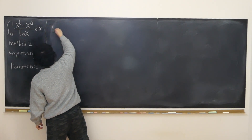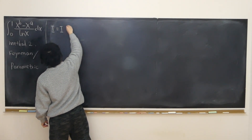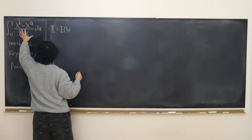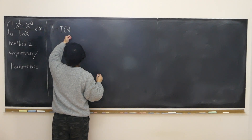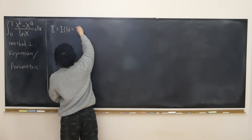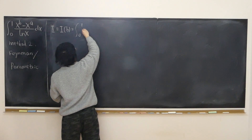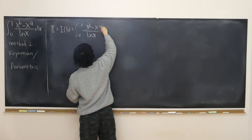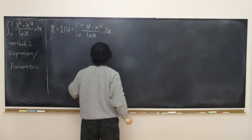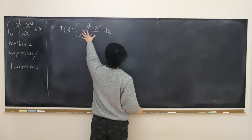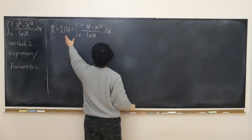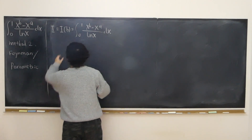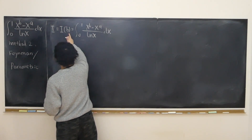Let I equal I(b), so this is my initial original integral treating b as the unknown — the integral from zero to one of (x^b minus x^a) divided by log(x) dx. As the value of b changes, the entire integral also changes. Now I'm going to differentiate with respect to b.